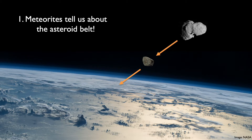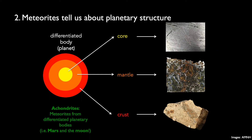Broadly, meteorites tell us about the asteroid belt and asteroids in general, since the majority come from these solar system objects. More specifically, meteorites tell us about planetary structure. Achondritic meteorites come from differentiated planetary bodies — bodies that grew large enough to form a core, a mantle, and a crust, just like Earth has. We have meteorites in our collections that represent core material, mantle material, and crust material.